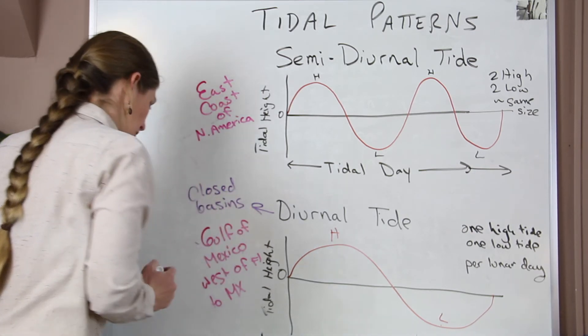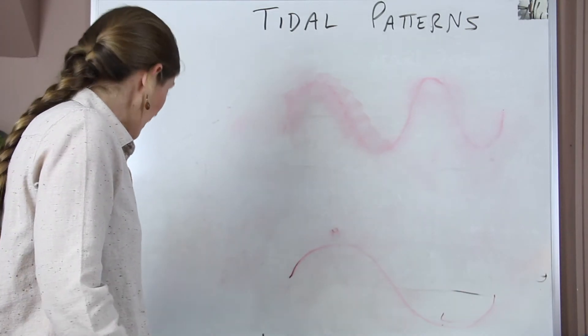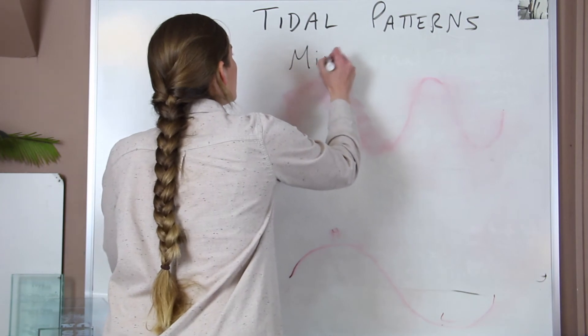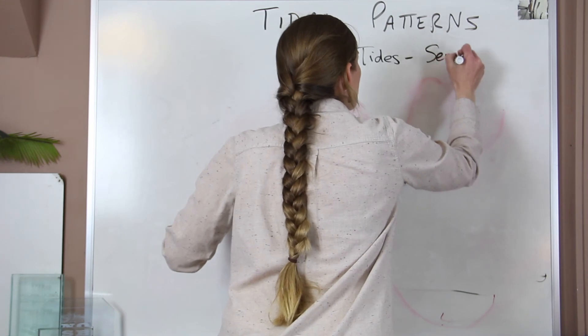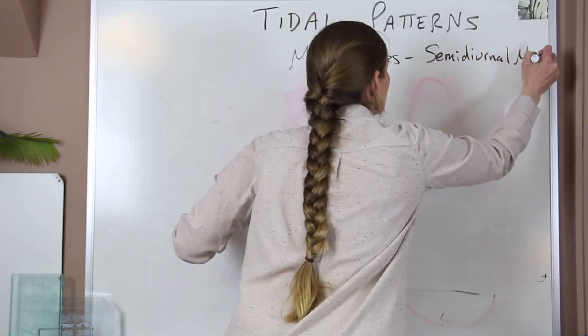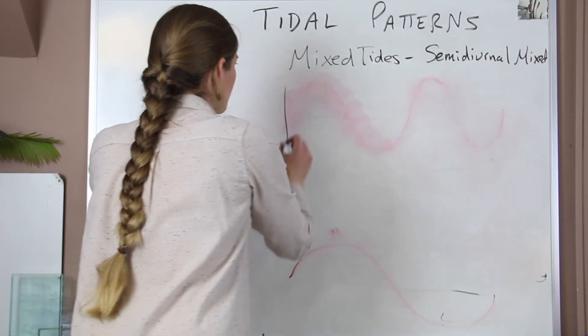Alright, now the third type of tidal pattern that we have is our mixed tides, and these are also sometimes called semi-diurnal mixed. Okay, so what happens for these? We'll draw that same chart.